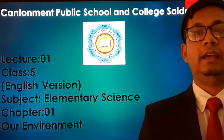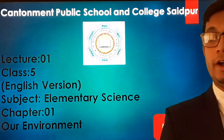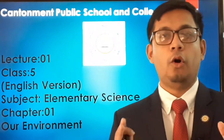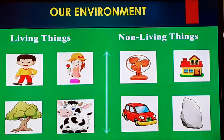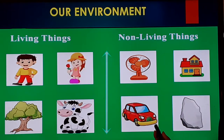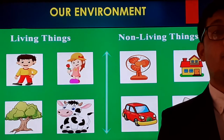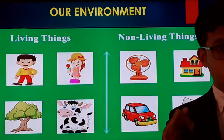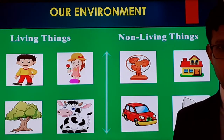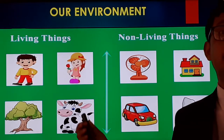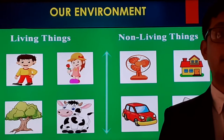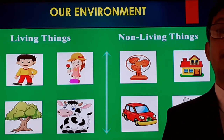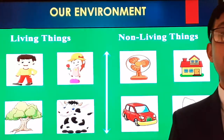We live in a world where we stay in a particular environment. In our environment, there are two types of things: living things and non-living things. Living things are those which have life — human beings, animals, trees, and plants are all living beings. So the definition of living things: living things are those which have life.